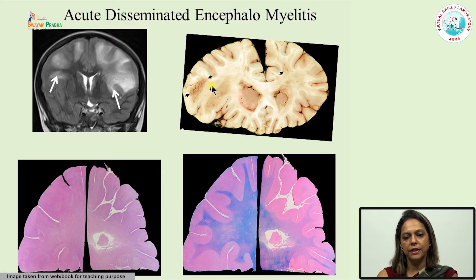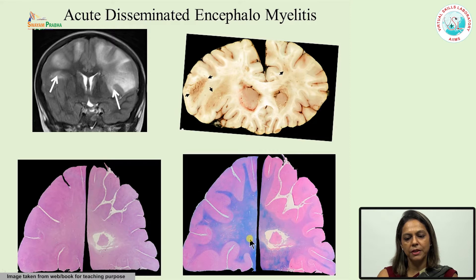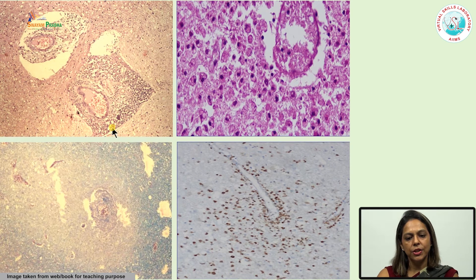This is a gross picture of a coronal section of the brain showing areas of demyelination — one can be seen here and small areas of demyelination can be seen on this side also. This is an H&E stain section showing an area of rarefaction, and this is a section stained by Luxol fast blue, which is a stain used to depict myelin. On this side you can see the myelin is relatively preserved, but in the area of rarefaction seen in the H&E stain section, it is not stained by Luxol fast blue, meaning there is demyelination in this area. The H&E stain section shows extensive perivascular chronic inflammatory infiltrate mostly comprising lymphocytes and macrophages, with an area of rarefaction due to demyelination.